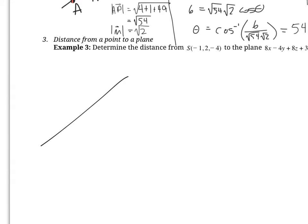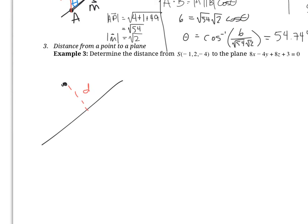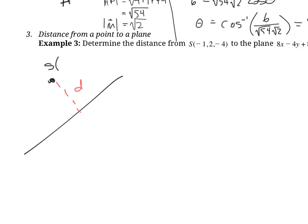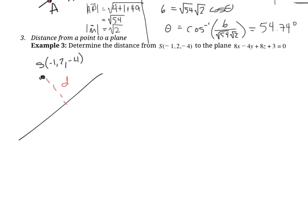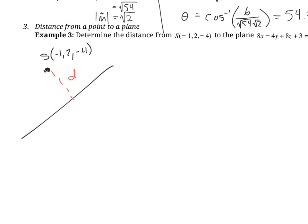We have a plane — imagine we're looking at the edge of it — and a point floating above that plane. We want the distance between the point and the plane. The drawing looks very similar to the previous one. Similar to how we used a point on the line before, we can find a point on the plane and use a similar approach to find the distance D using a right-angle triangle setup.